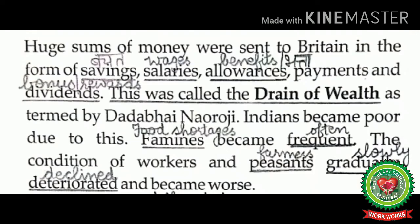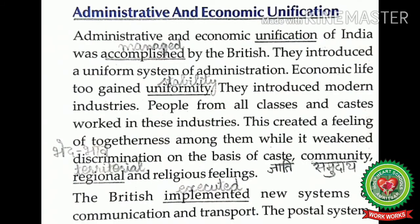There was a continuous flow of wealth from India to Britain, termed as drain of wealth by Dadabhai Naoroji. Moreover, food shortages were frequent during that period and farmers were the main victims of British colonial policies. The government took away a large part of their produce in the form of land revenue and other taxes, so the condition of farmers became worse day by day.